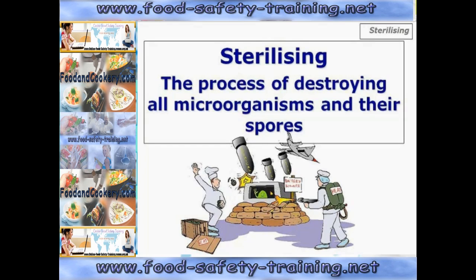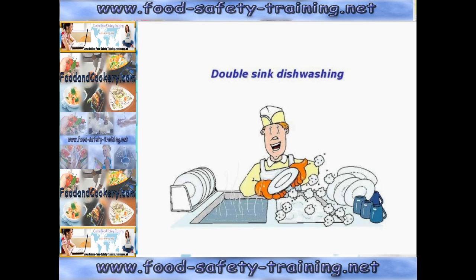Sterilising is the process of destroying all microorganisms and their spores, which in reality is quite difficult to achieve. We can achieve it in the canning industry by cooking the product to 121 degrees Celsius for 3 minutes or more — called the botulinum cook — which will kill Clostridium botulinum spores. The term is quite often misquoted; when people say sterilising they sometimes mean disinfection, which is totally different. As an example, double sink dishwashing in school canteens often calls the hot water sink above 82 degrees Celsius a sterilising sink, but it is in fact a disinfecting sink.